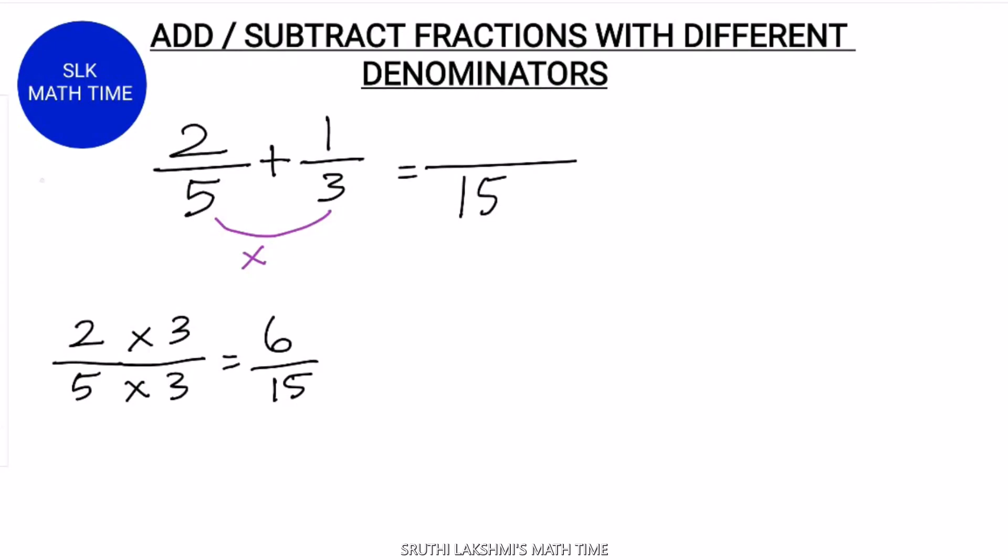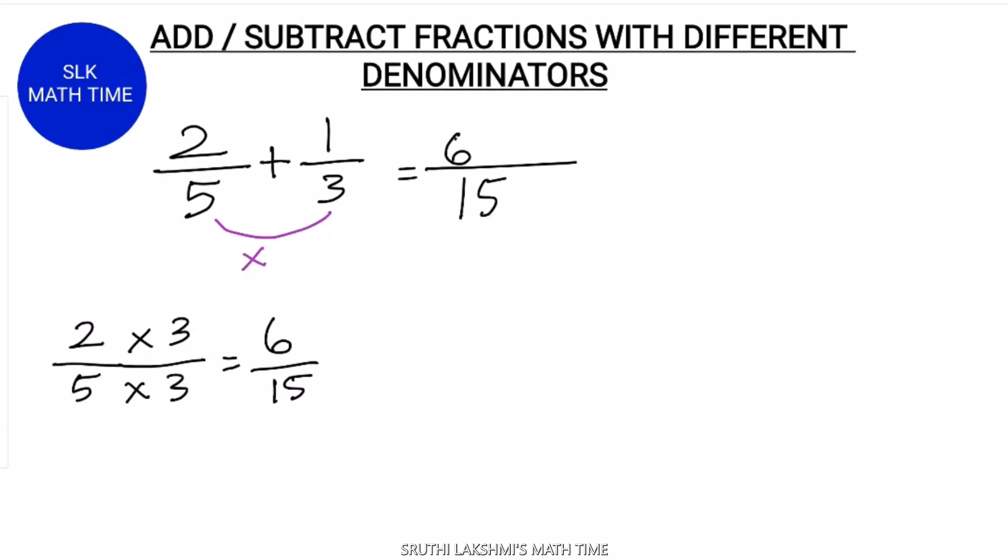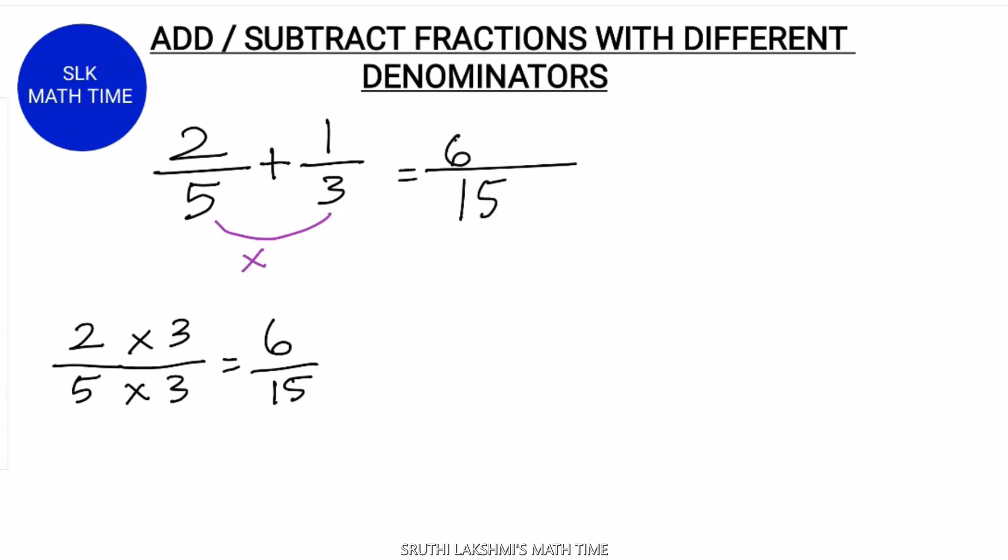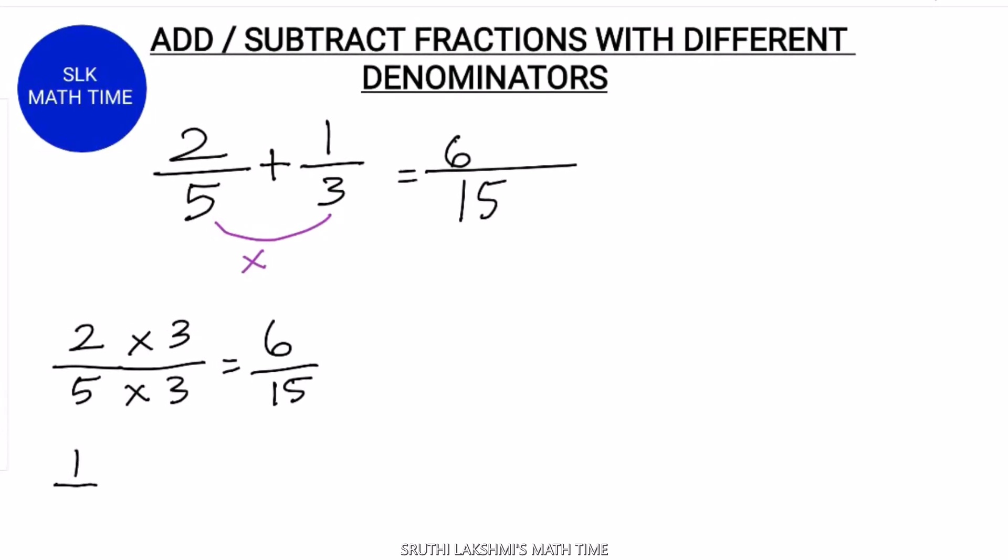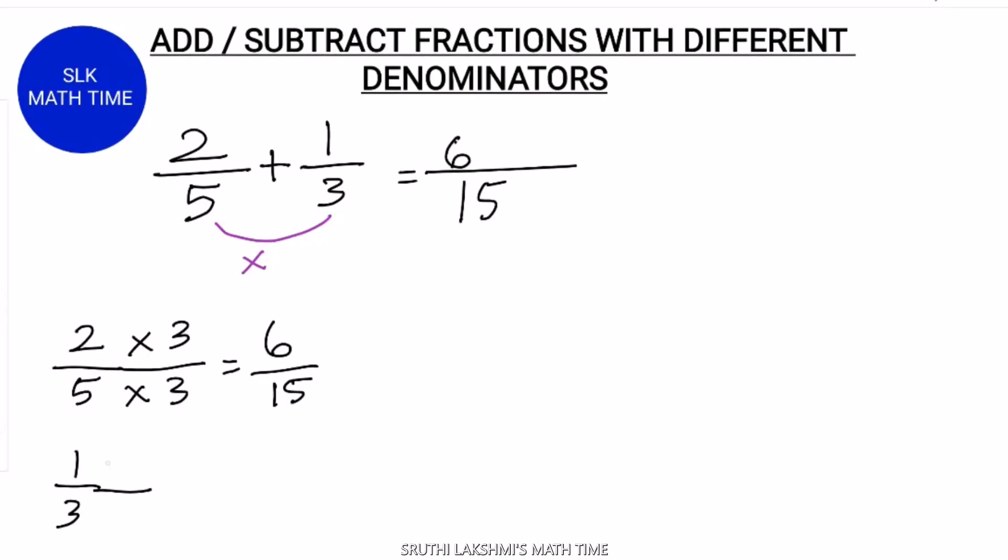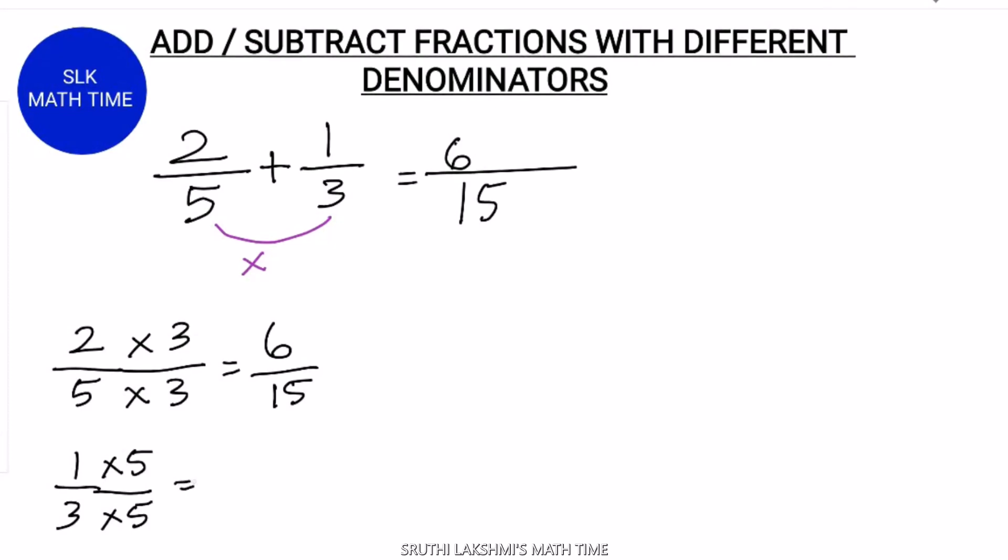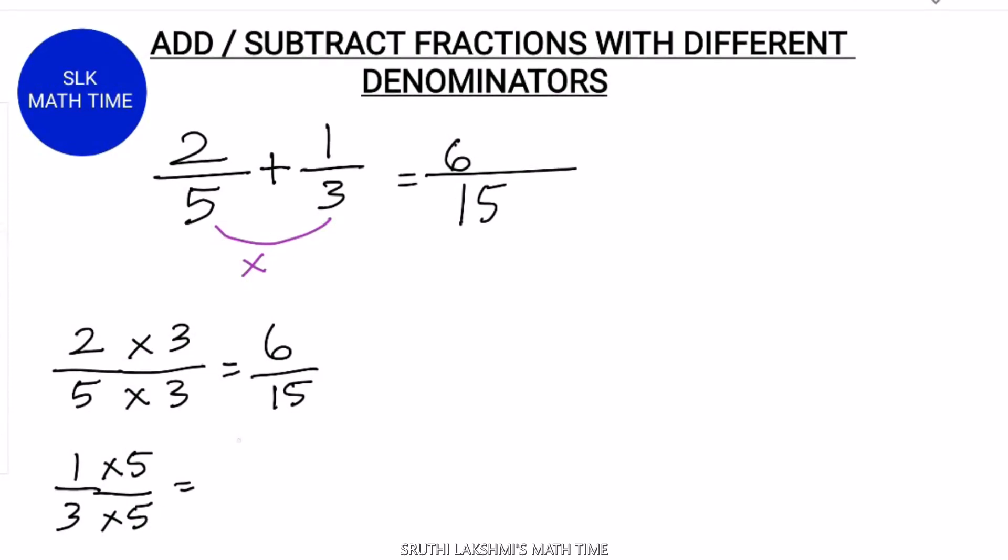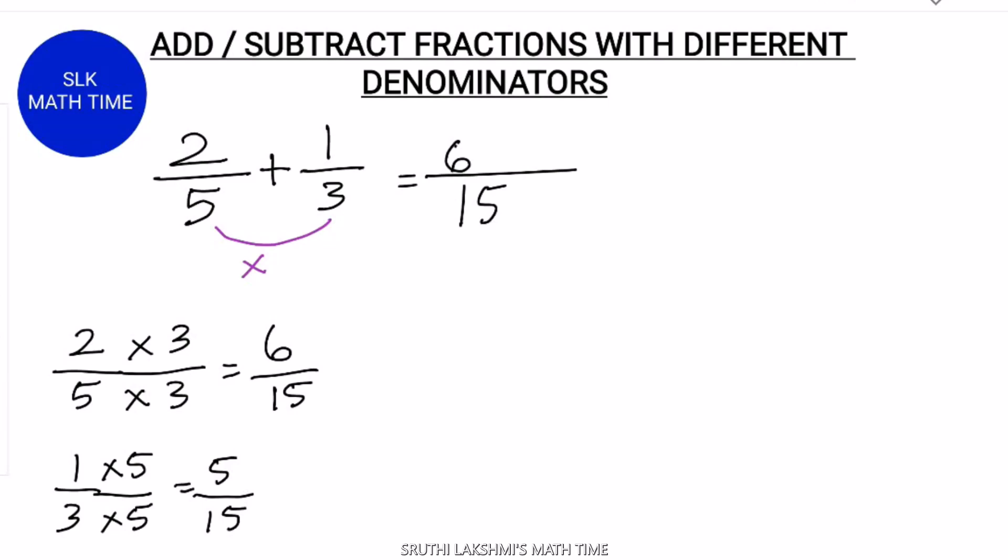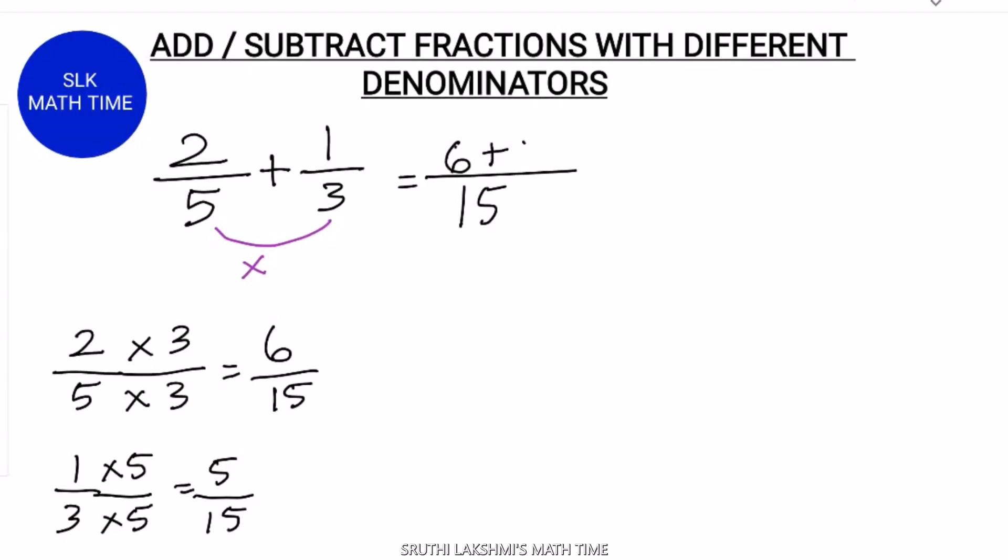Write 6 by 15 over here. Next, see 1 by 3, the other fraction that we are adding. We have to multiply the numerator and the denominator with 5, because 3 times what equals 15? 5. So 1 into 5 is 5 and 3 into 5 is 15. Write 5 by 15.